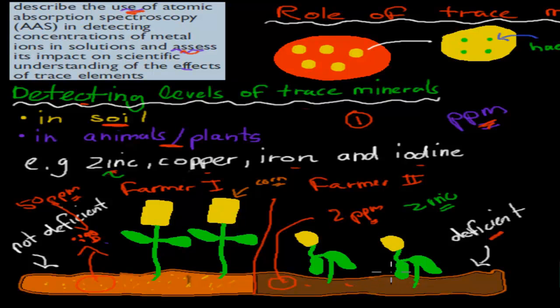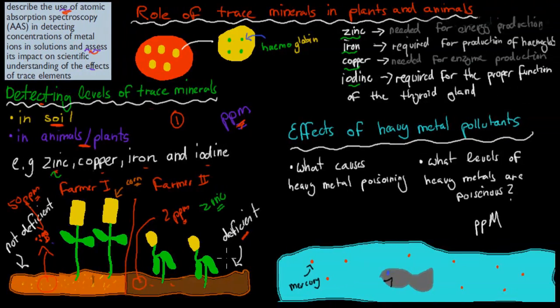Before AAS, we didn't have this technology which allowed us to figure this out. But with AAS, we had the technology and we could figure out different levels of trace minerals in soil and in tissue of plants and animals. And that allowed us to figure out what these different types of minerals are actually used for as well. That was the second part.